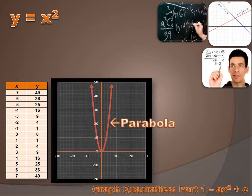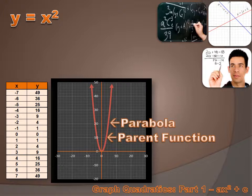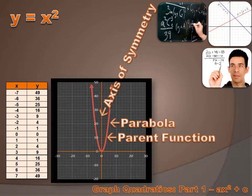Sometimes they're facing up, sometimes facing down, sometimes facing to the left, and sometimes to the right — but they're all parabolas. That graph is the graph of the parent function, and all other quadratic equations when you graph them are going to be variations of that parent function. There's a couple of other things I want you to understand about this graph. The first is there's an axis of symmetry — a line that runs right down the middle of the graph, and each side of that line is completely a mirror image of the other side. In this case, the axis of symmetry is the line x equals zero, the y-axis.